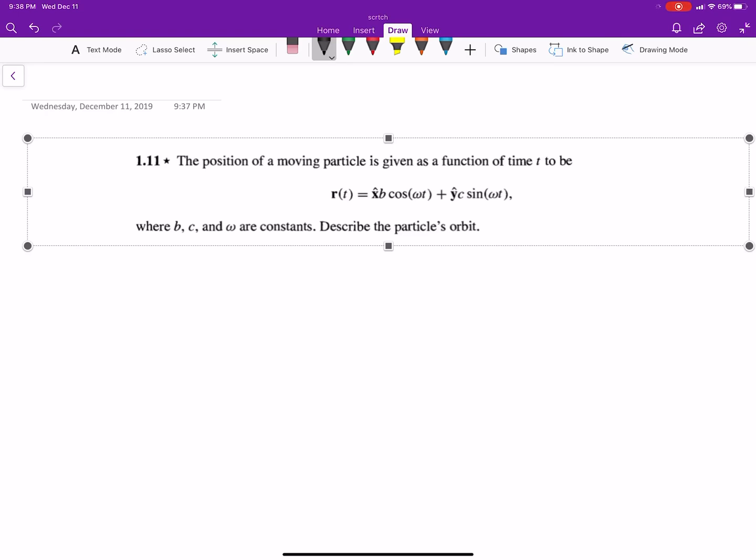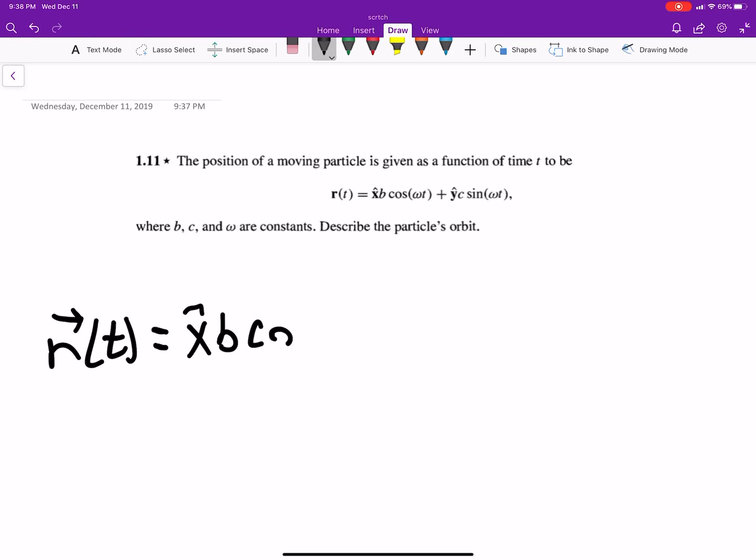It says, the position of a moving particle is given by r of t equals x hat b cosine of omega t plus y hat c sine omega t, where b, c, and omega are constants. Describe the particle's orbit.